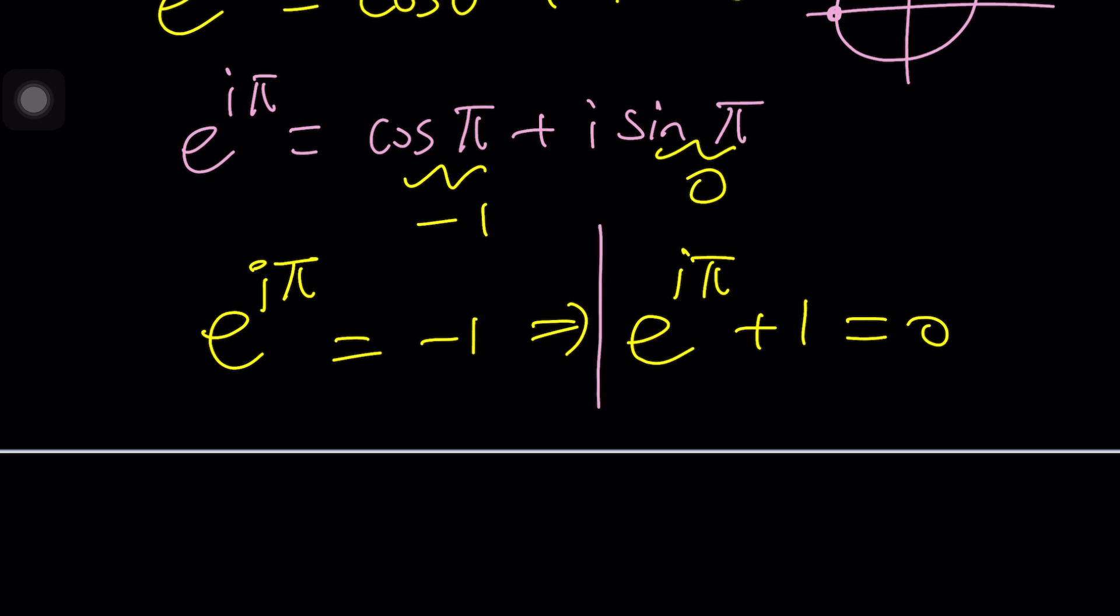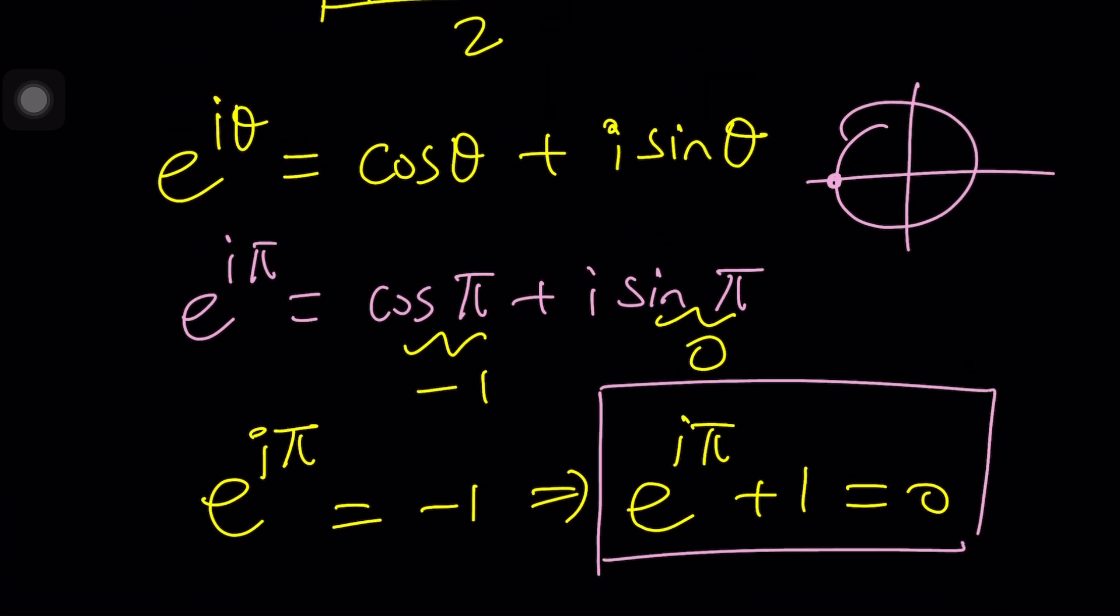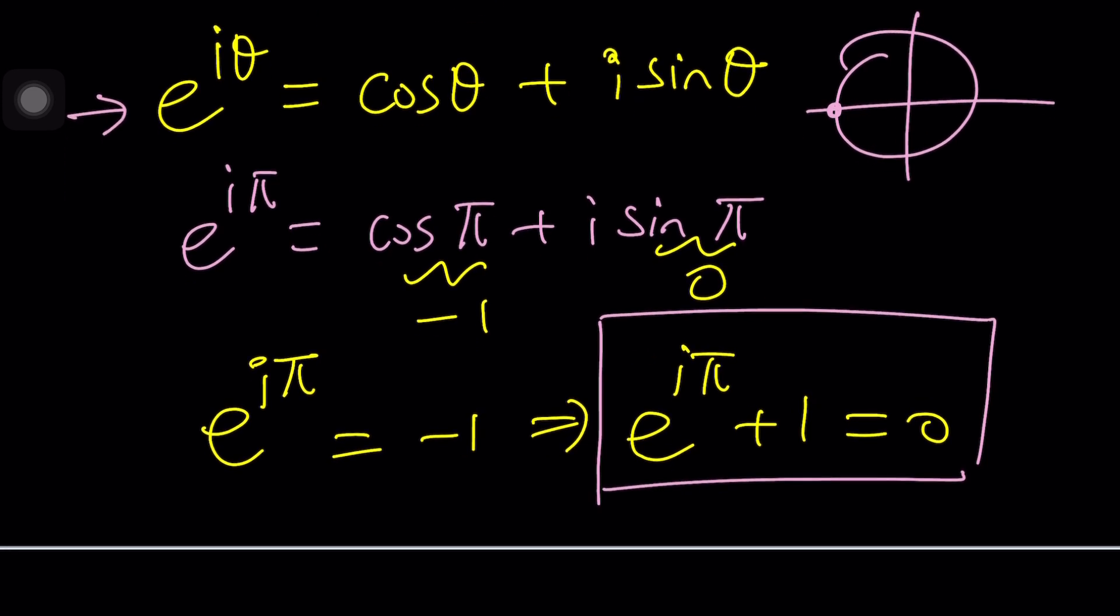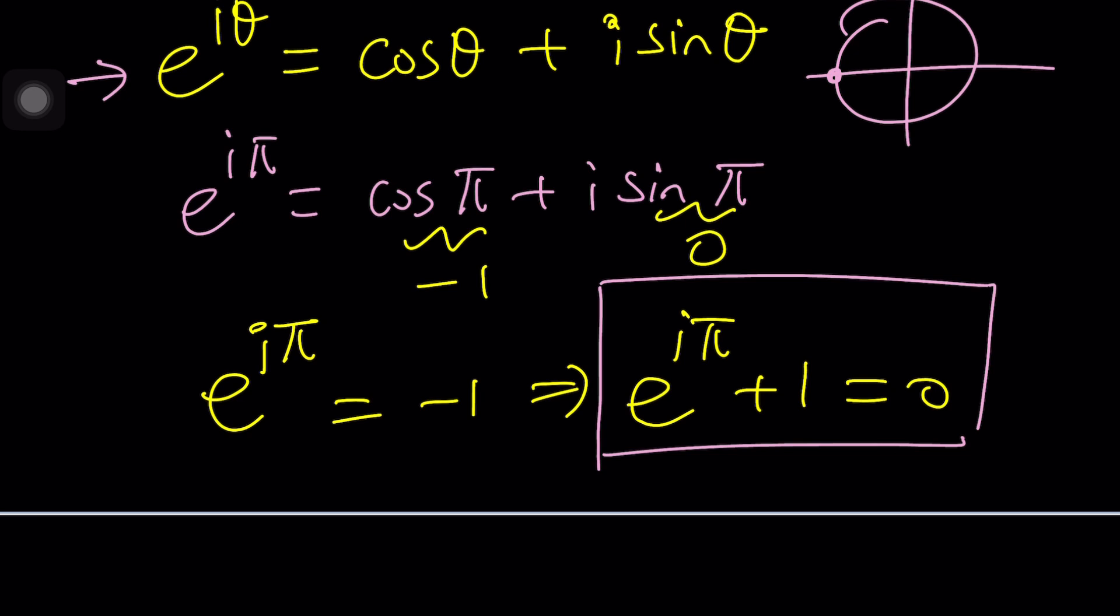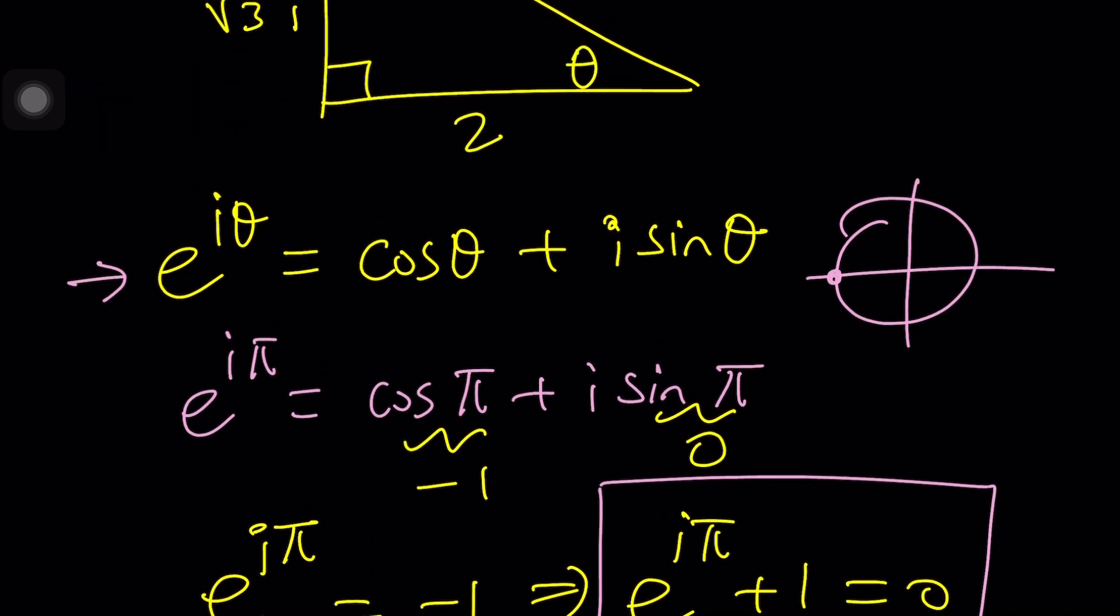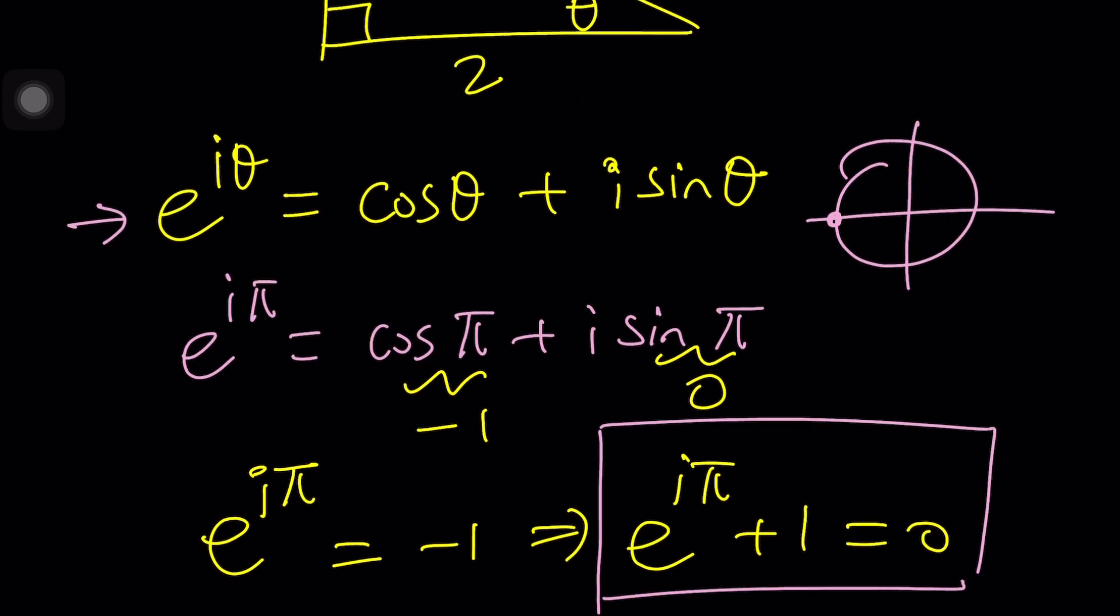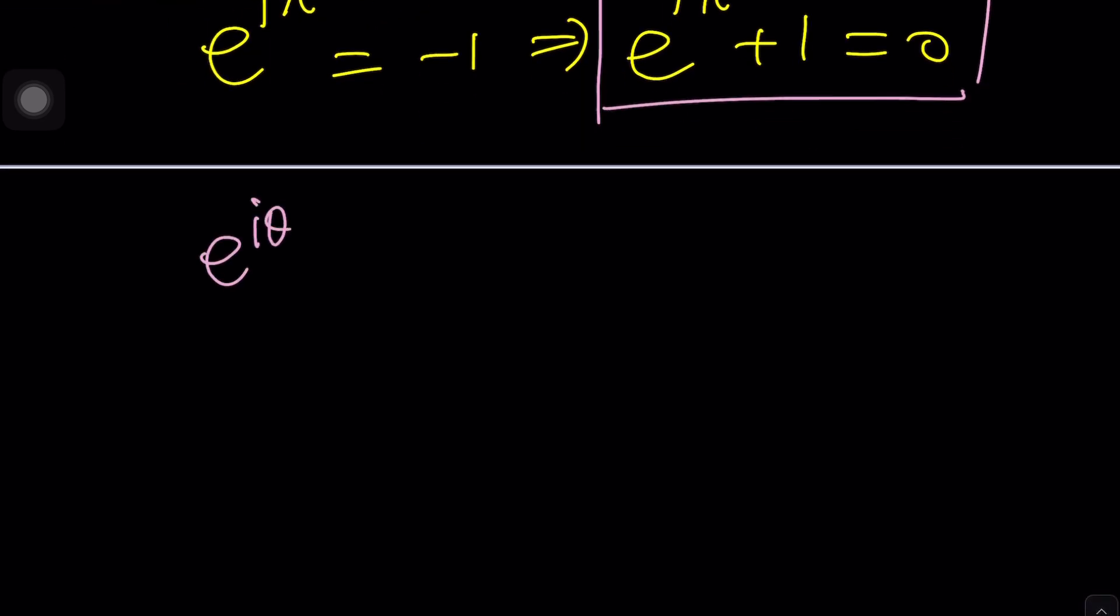I can talk about how to come up with this type of equation in another video. But this is a really nice identity known as Euler's identity, one of Euler's identities. Let's go ahead and use this because we have e to the i theta equals cosine theta plus i sine theta. And then by replacing theta with negative theta, I get cosine of negative theta, which is the same as cosine theta because cosine is even. But sine of negative theta is going to be negative sine of theta.